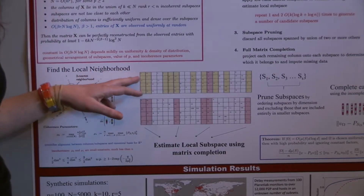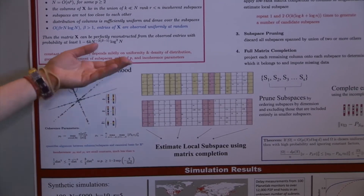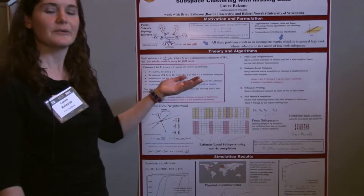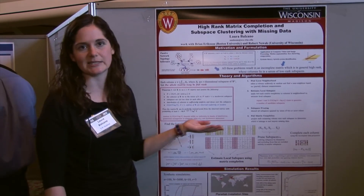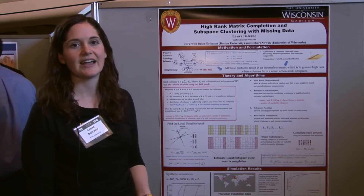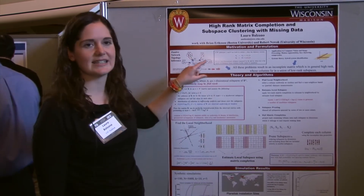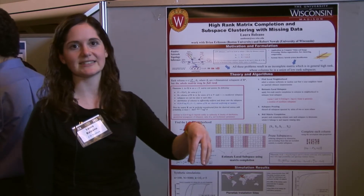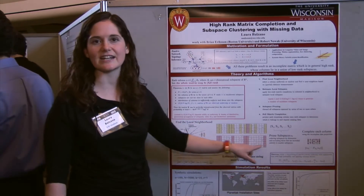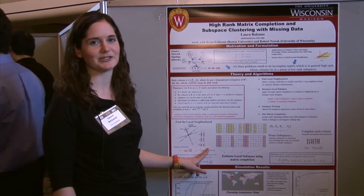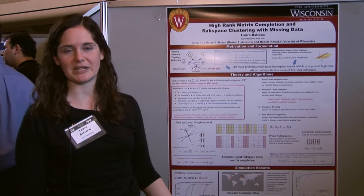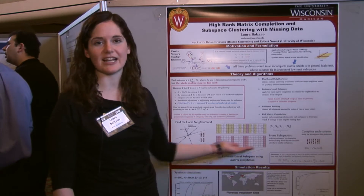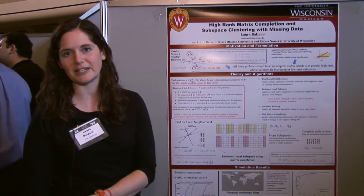Now, this matrix in general is high rank. So even though this looks like the standard matrix completion problem, we're not able to apply low rank matrix completion techniques because the matrix isn't low rank. However, it turns out that in this network problem, all the IP addresses that are within one subnet — if you focused in on those IP addresses in this matrix — that submatrix would in fact be low rank. In this application, it's rank 2.